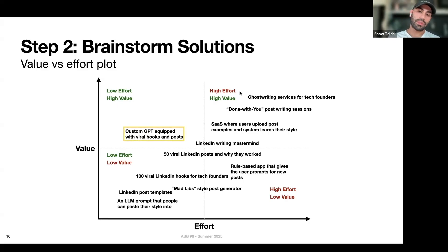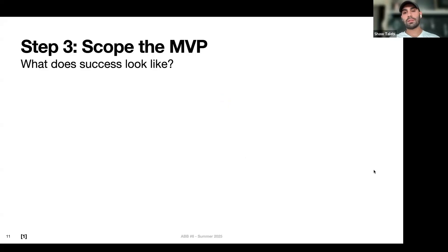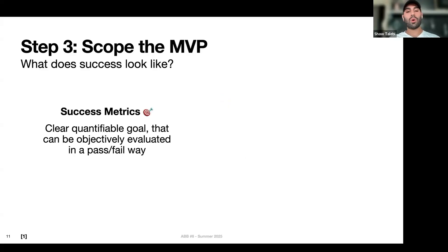Arguments could be made for something high effort or something low effort as well, but let's say for this project this is the solution we want to move forward with. Now that we have a solution, we can scope out the MVP. The most important question to ask yourself is: what does success look like? This means success metrics — clear, quantifiable goals that can be objectively evaluated in a pass/fail way.